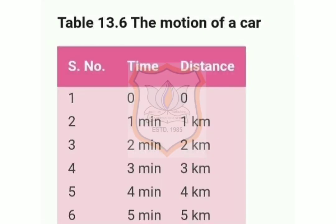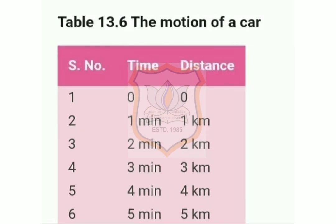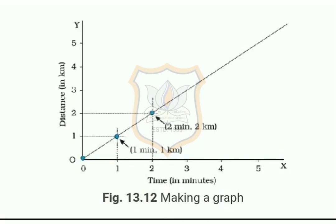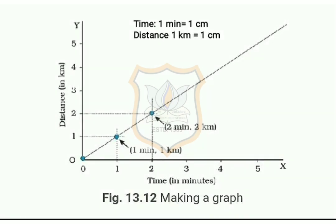Buzo and Paheli found out the distance traveled by a car and the time taken to cover that distance. Their data is shown in table 13.6. Draw two perpendicular lines to represent the two axes, mark them as OX and OY, show time along the X-axis and distance along the Y-axis.